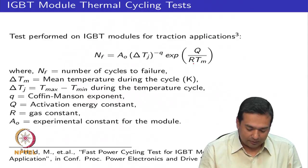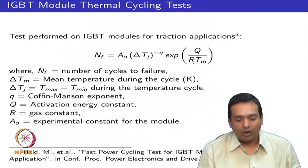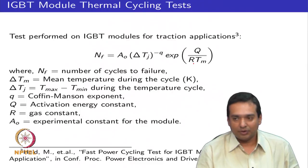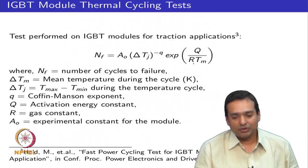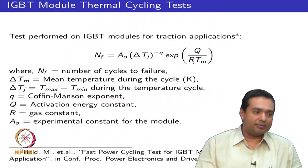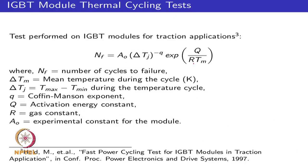We looked at the impact of different maximum junction temperatures Tj_max for your design — for example 125, 135, or 115 degrees centigrade — on the number of cycles to failure and the service life of the power module. We saw this could be used as a design guideline based on application requirements, examining a system cycling between full-on and full-off conditions.